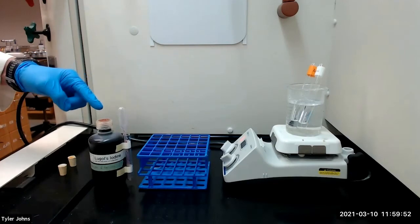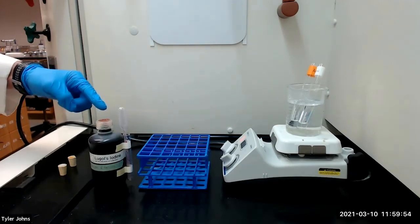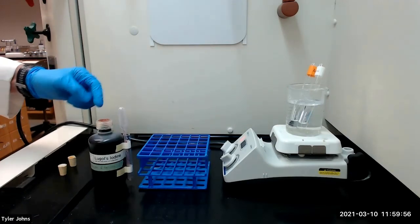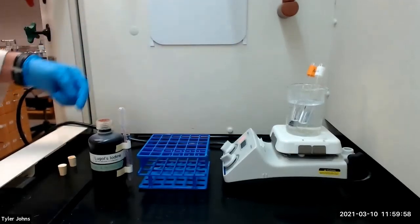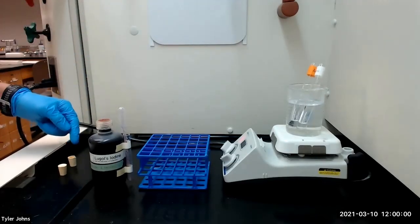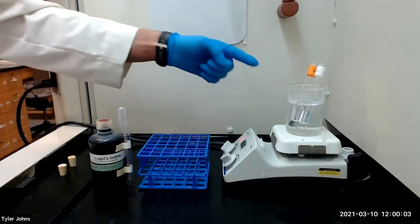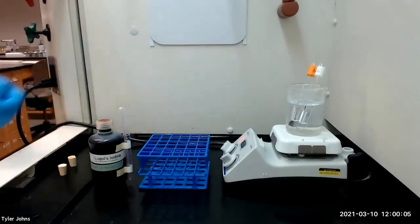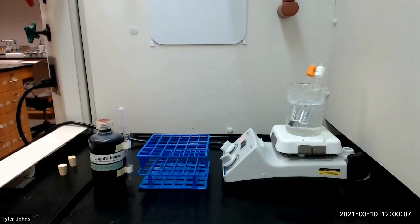We will next add four milliliters of Lugol's iodine solution in one milliliter portions to the test tubes, making sure to cork and shake the tubes after each addition of iodine. We will then heat the mixture in the hot water bath for five minutes with occasional shaking. It is likely that the dark color of the iodine reagent will be discharged.